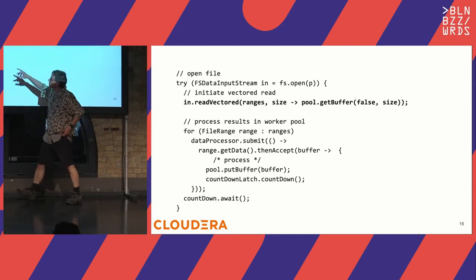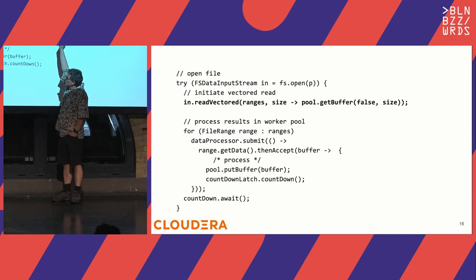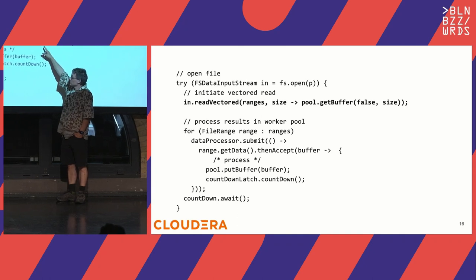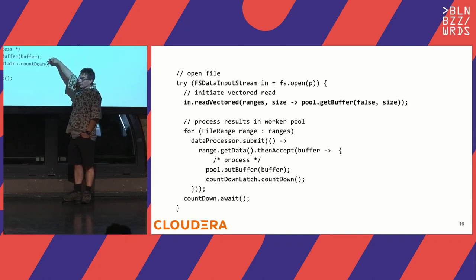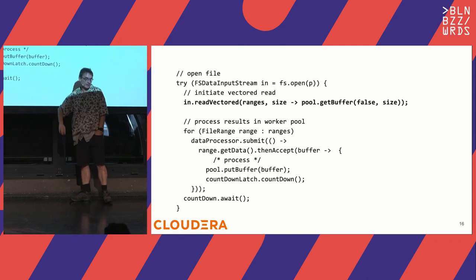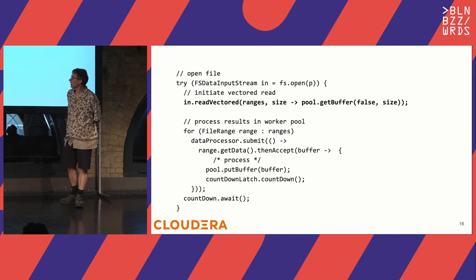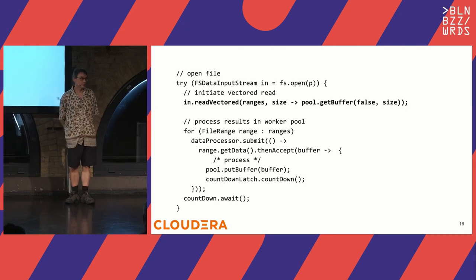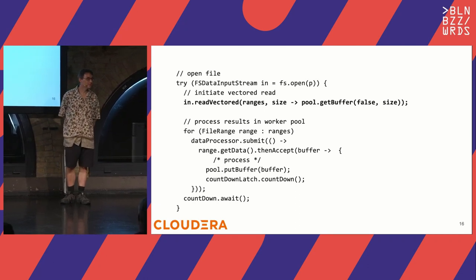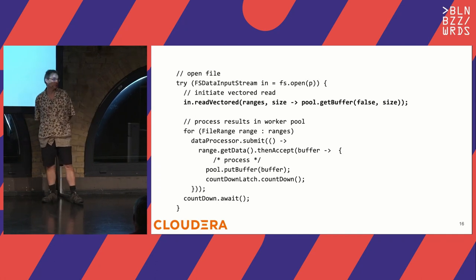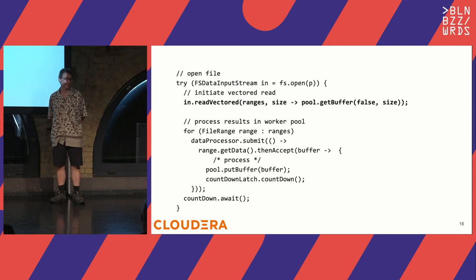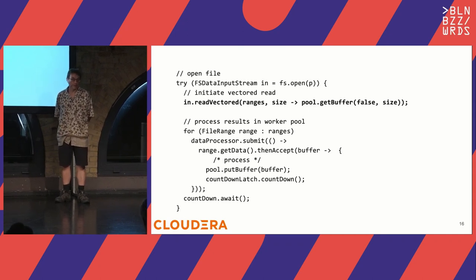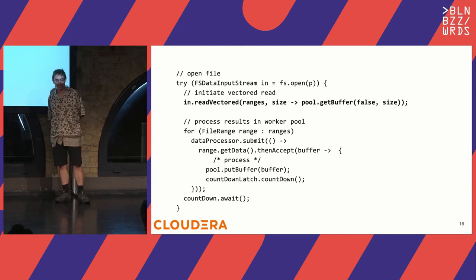What happens internally: we get the list of ranges, throw each into the thread pool allocated to process it. Here we return the buffer back into the pool, and we have a countdown latch so you can block until it's all ready. If doing something more complex where responses come in random order, the opaque reference tells you which piece of your code a response corresponds to — you grab it, cast it to whatever Java or Scala class you want, and work on it. That's how callbacks work: grab the reference, cast it, process.